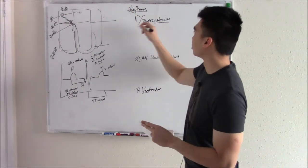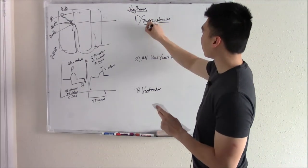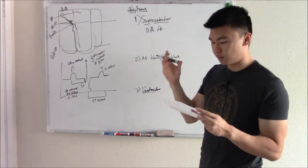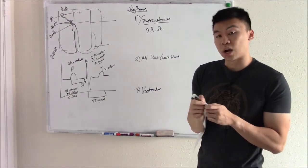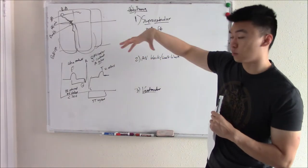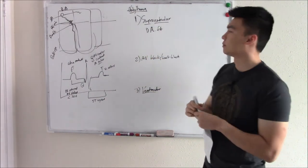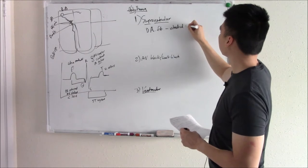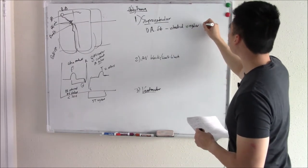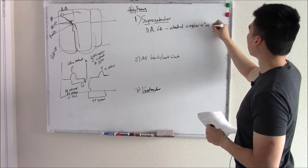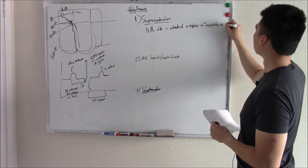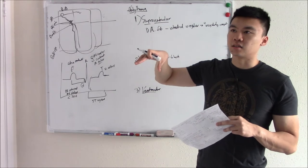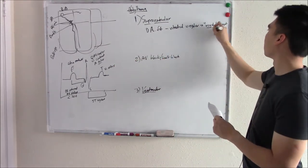Let's talk about supraventricular arrhythmias. You can have atrial fibrillation, or AFib. Fibrillation means moving without coordination — the atria are not contracting regularly. They're just vibrating there, and the heartbeat is irregularly irregular. Sometimes it vibrates really fast, sometimes really slow, with no coordination.